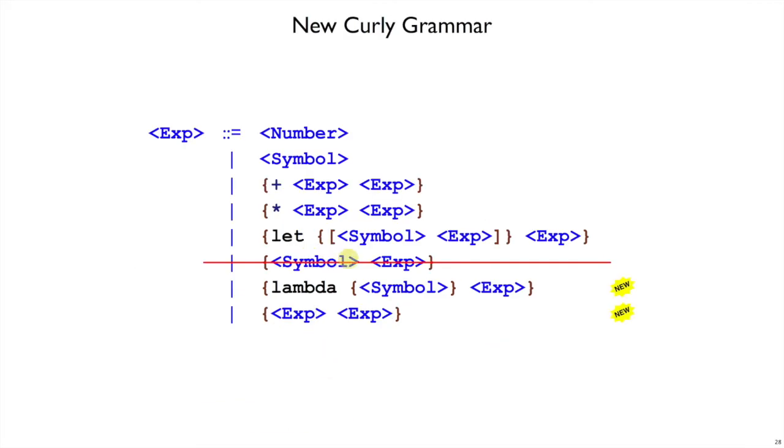So we're going to fix the grammar for exp to solve this problem. I'm going to throw out this line that I warned you wasn't quite right, and we just have any expression applied to any expression. So this curly brace means function call still, but we can put any expression, like a lambda, a name which is maybe the argument to another function, some arbitrarily complicated expression that produces a function to apply to another expression.